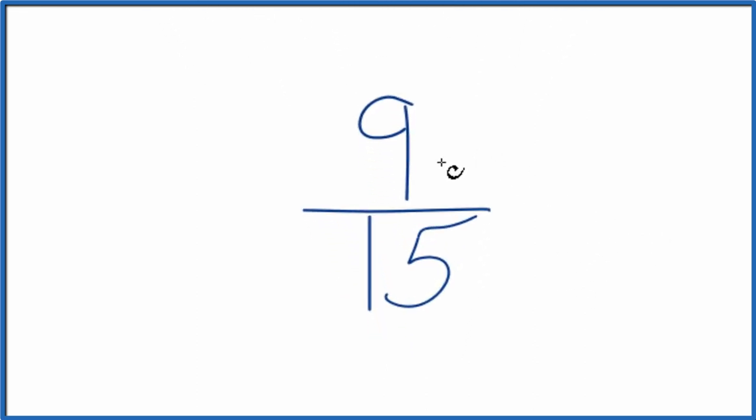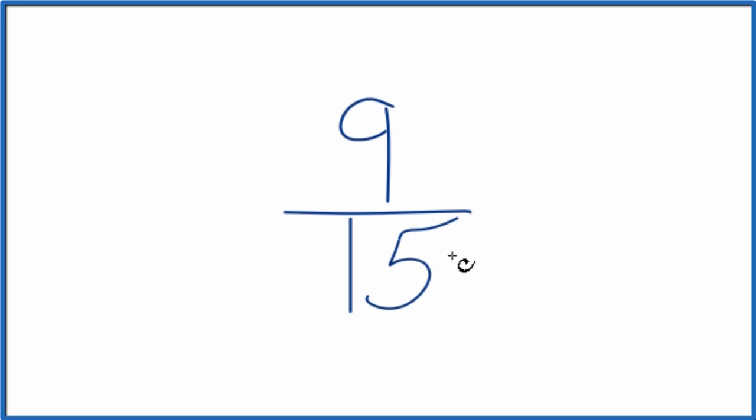To do that, we need to know the factors of both 9 and 15, find a number that goes into both 9 and 15. So let's list those factors.